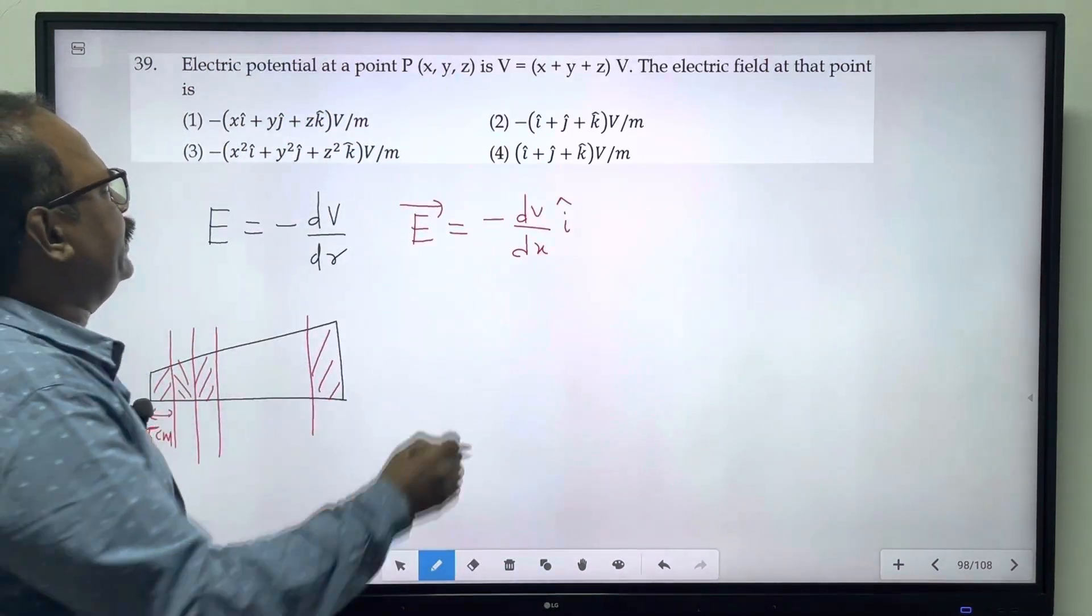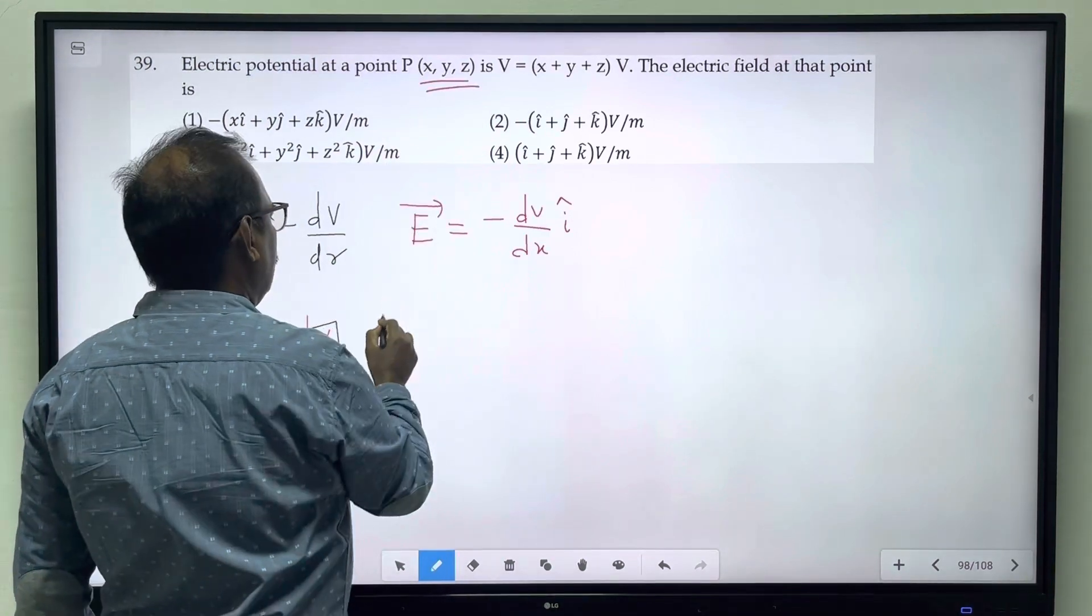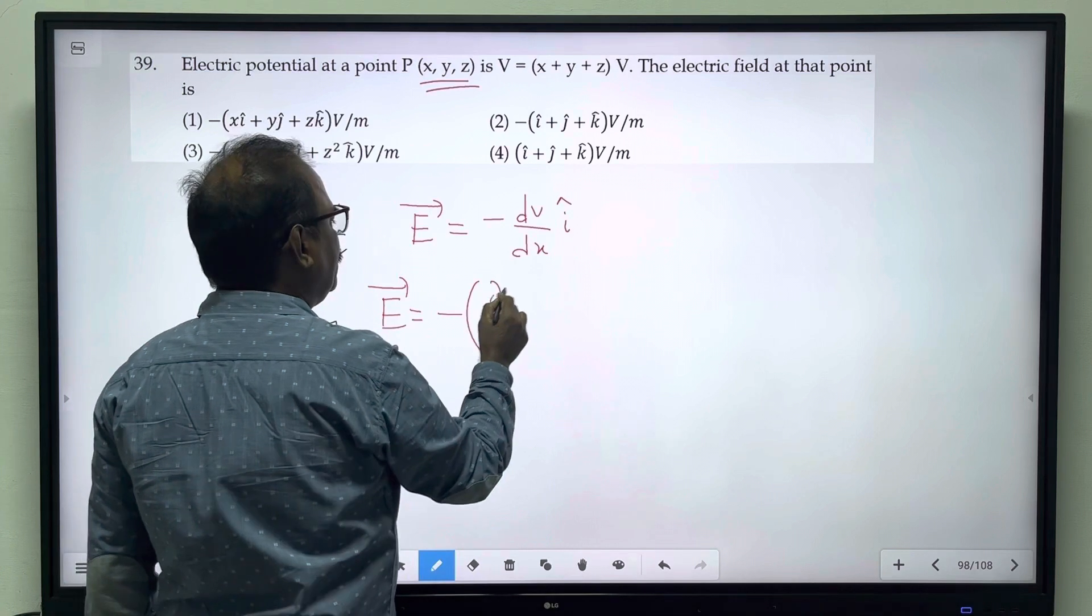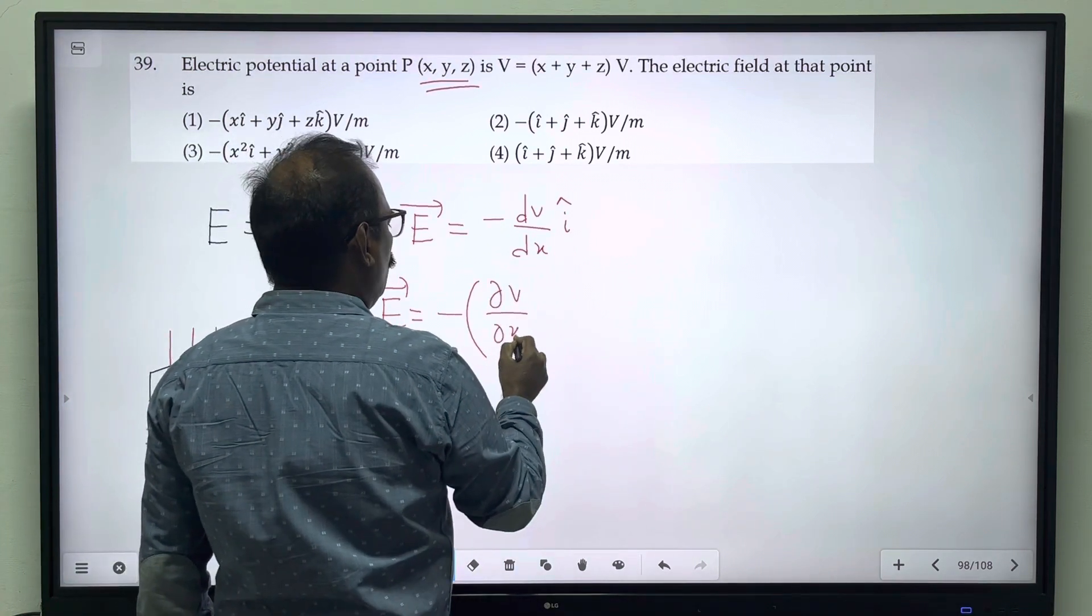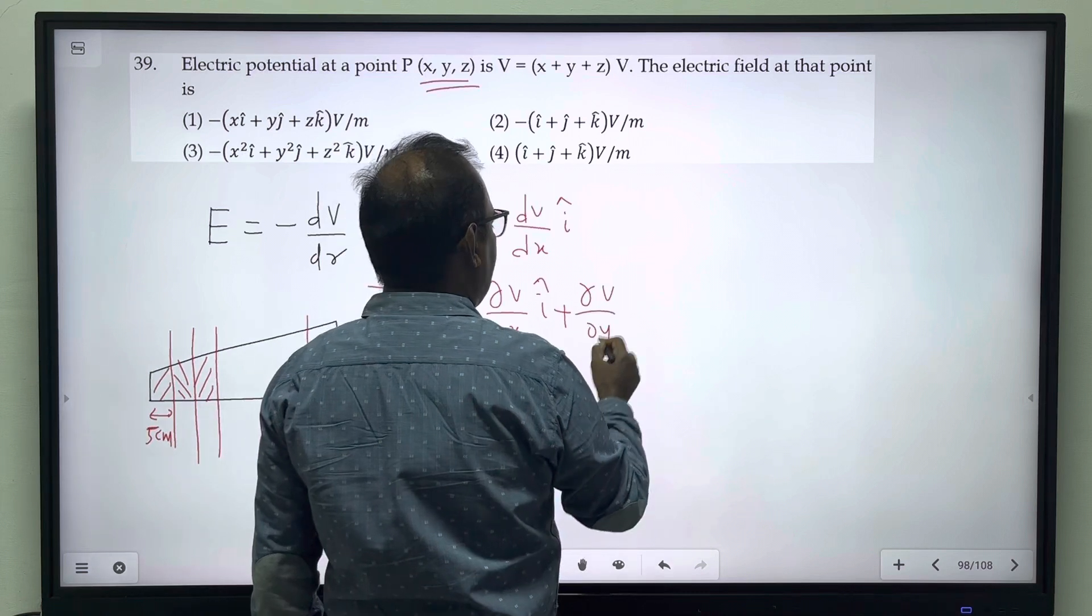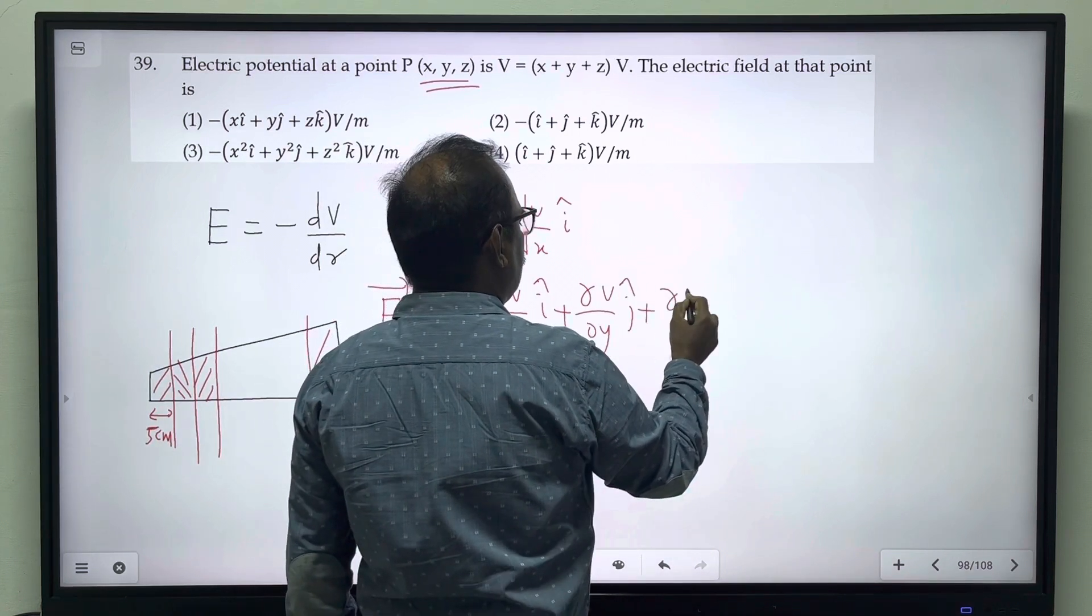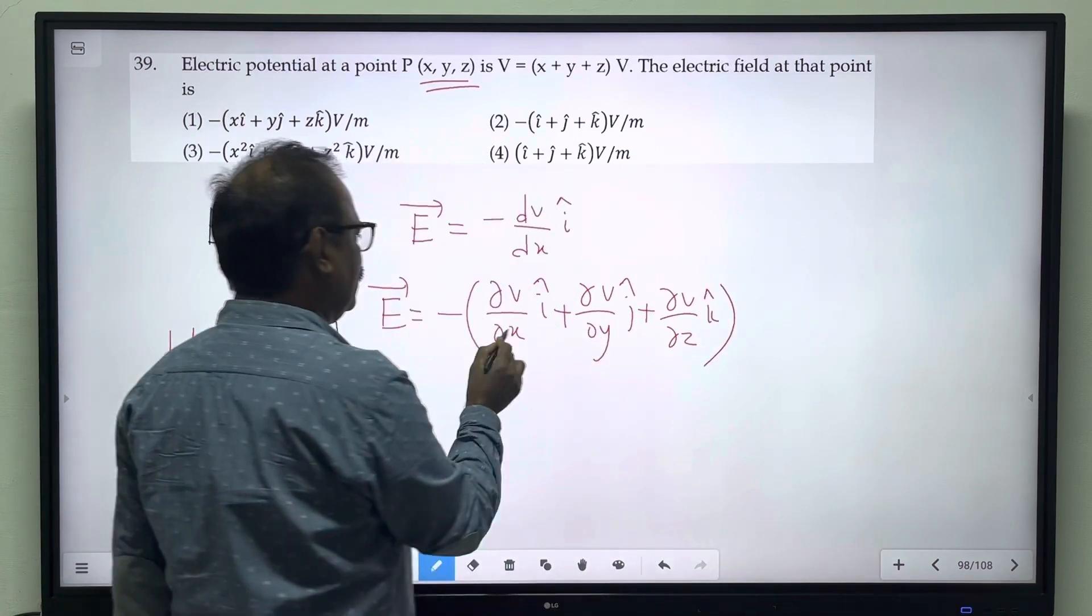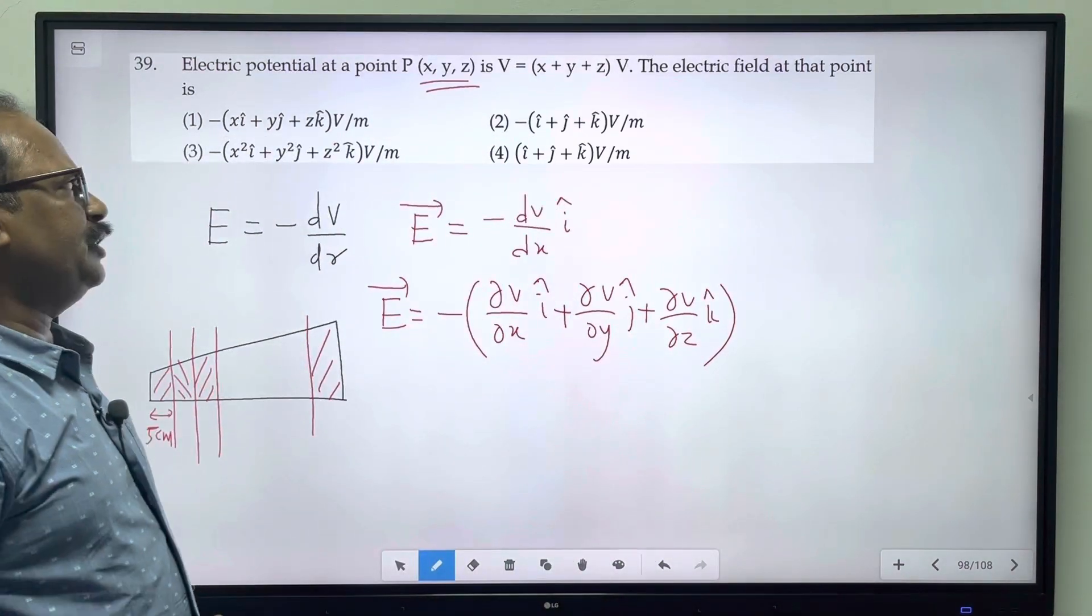In a three-dimensional plane, E vector uses partial differentiation: ∂V/∂x i-cap, ∂V/∂y j-cap, plus ∂V/∂z k-cap. This is the relationship between electric field and electric potential.